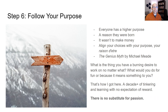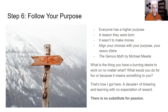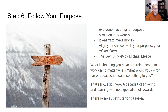Step six: follow your purpose. Everyone has a higher purpose — some reason they were born, not just the biological reason. You weren't born to make money. You have some higher purpose, and if you align your choices with that higher purpose, things will work out. This is called alignment — not in machine learning terms, but spiritual or philosophical alignment. There's a book called The Genius Myth by Michael Meade that talks about this. It's never going to be like a clear divine message — it's more like you just know what you have to be doing.